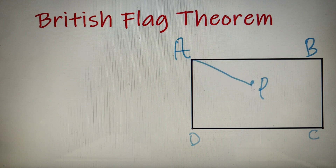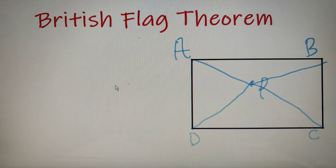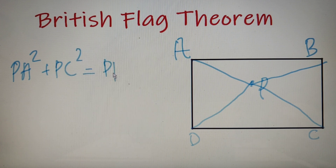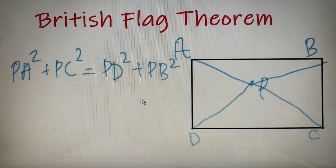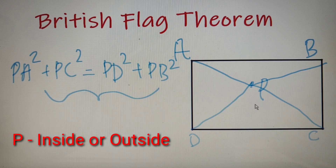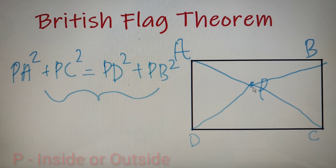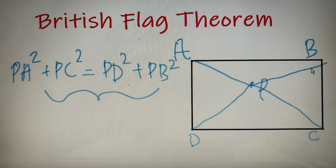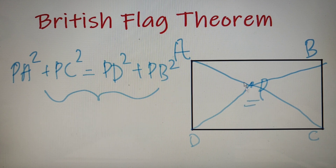According to the theorem, AP² + PC² will always be equal to DP² + PB². This equation — PA² + PC² = PD² + PB² — is known as the British flag theorem. Importantly, the point P can be inside or outside the rectangle.